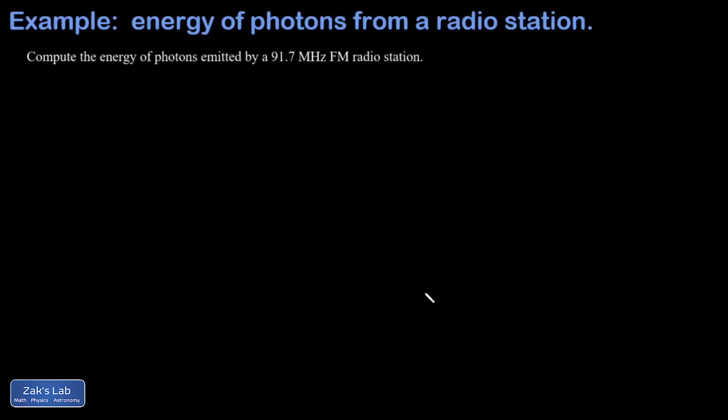In this video we're computing the energy of photons based on their frequency. I chose 91.7 megahertz photons from an FM radio station. The energy of a photon is given by E=hf, where h is Planck's constant.